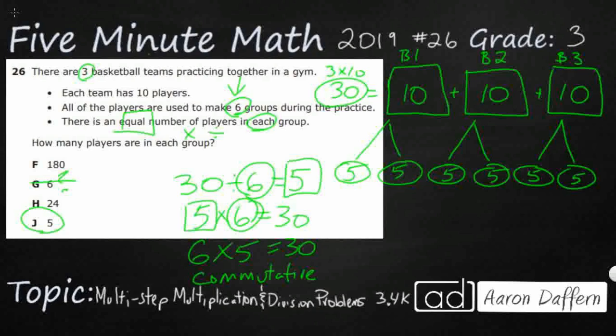But it is a tricky one because you do use a 6 times 5 or a 5 times 6 to get your answer of 30. Now, let's look at the other two. 180 is a really big number and it doesn't make any sense. How are you going to have 180 players in each group if there's only 30 total?